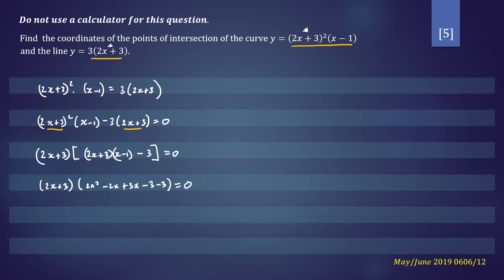So that will give us 2x plus 3 and 2x plus 3 and 2x squared plus x minus 6 equals 0. Which will give us 2x plus 3 and 2x plus 3 and 2x plus 2 equals 0.